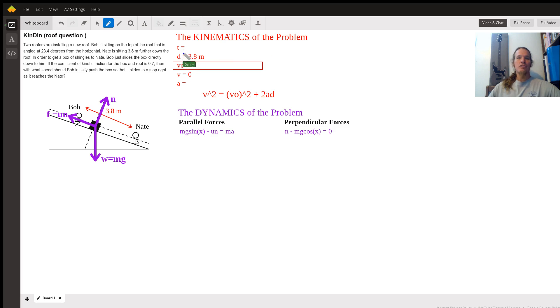So I set up a kinematics chart: time, displacement, initial velocity, final velocity, and acceleration. I put a box around the initial velocity because that's what we're trying to find in the end.